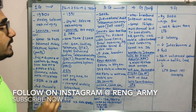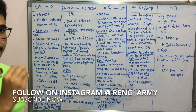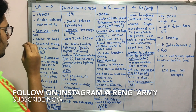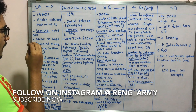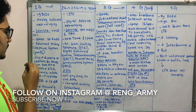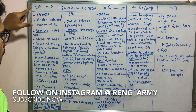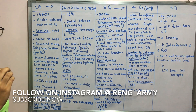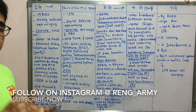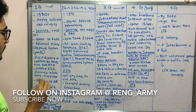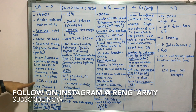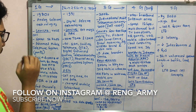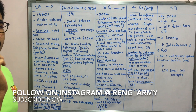Under 1G technology, you have the Advanced Mobile Phone System (AMPS). The Federal Communications Commission (FCC) assigned 40 MHz of spectrum for AMPS specifically, out of the 800 MHz spectrum. AMPS targeted 832 channels, providing a data rate of about 10 kbps, with a signal-to-interference ratio of 18 decibels.